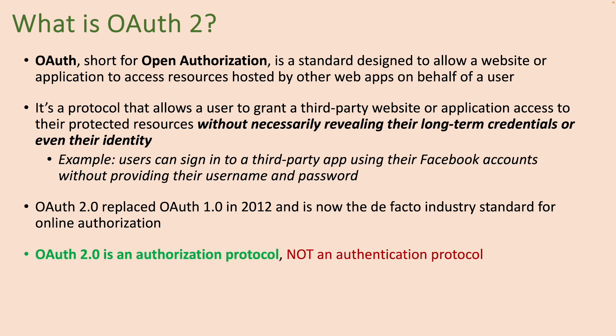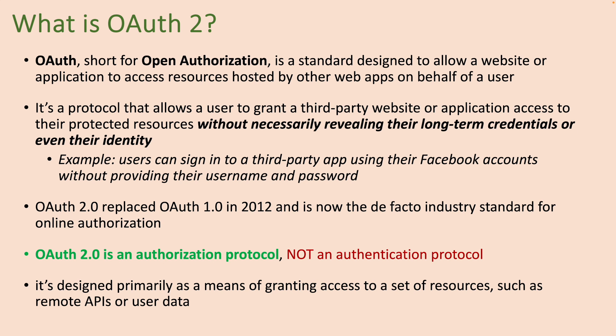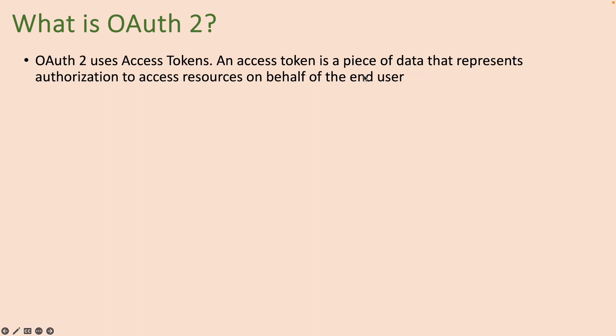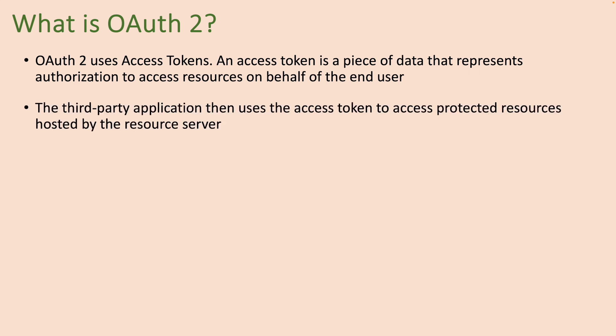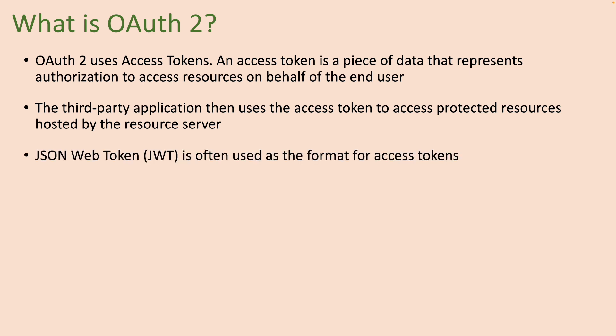OAuth 2.0 is an authorization protocol — it is not an authentication protocol. It's designed primarily as a means of granting access to a set of resources such as remote APIs or user data. OAuth 2.0 uses access tokens for authorization. An access token is a piece of data that represents authorization to access resources on behalf of the end user. The third-party application uses the access token to access the protected resources hosted by the resource server. JSON Web Token, or JWT, is often used as the format for access tokens.